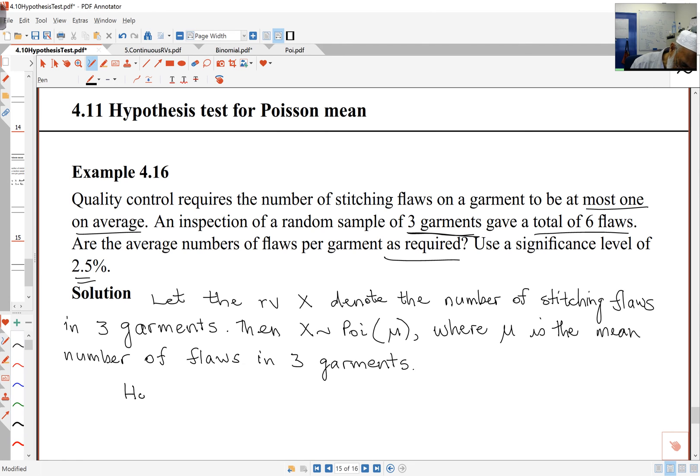The null hypothesis will be what was required by quality control. If I want one at most on average per garment, that means I want three on average in three garments, so this will say mu equals three.